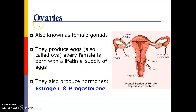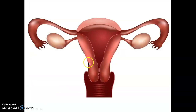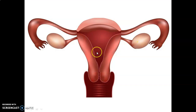The ovaries are also known as the female gonads. They produce eggs, also called ova. Every female is born with a lifetime supply of eggs. The ovaries also produce the hormones estrogen and progesterone. The ovaries are located at the end of the fallopian tube, as shown here — cervix, vagina, uterus, and fallopian tube.